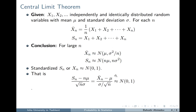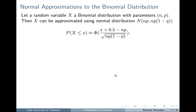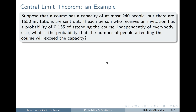Now let's talk about the application of the central limit theorem. It helps us approximate the binomial distribution. If X has the binomial distribution with parameters n and p, then X can be approximated using the normal distribution with mean mu equal to n*p and variance n*p*q. The probability that X is less than or equal to small x is approximately phi of (x minus mu) divided by sigma, where we add a continuity correction of 0.5.